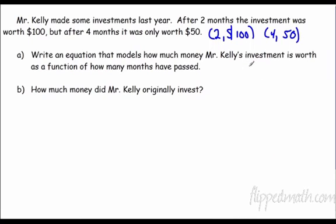y2, 50, minus y1, 100, over x2, 4, minus x1, 2. So that's negative 50 over 2, which is negative 25.